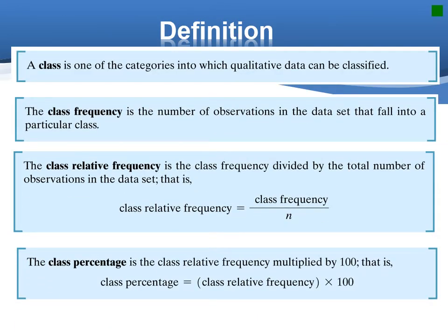Qualitative data are non-numerical in nature. Thus, the value of a qualitative variable can only be classified into categories, called classes. We can summarize such data in two ways. First, by computing the class frequency, the number of observations in the dataset that fall into each class.